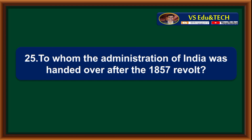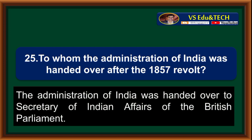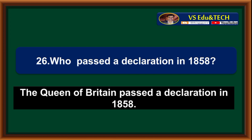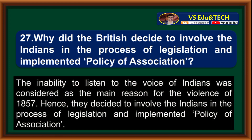To whom was the administration of India handed over after the 1857 revolt? The administration of India was handed over to the Secretary of Indian Affairs of the British Parliament. Why did the British decide to involve Indians in the process of legislation and implement the policy of association? The inability to listen to the voice of Indians was considered the main reason for the violence of 1857. Hence, they decided to involve Indians in the process of legislation and implemented the policy of association.